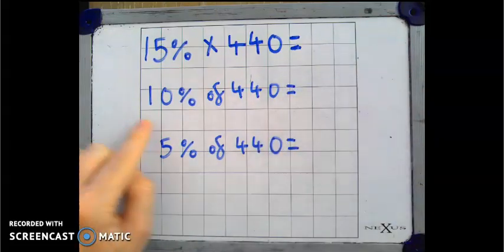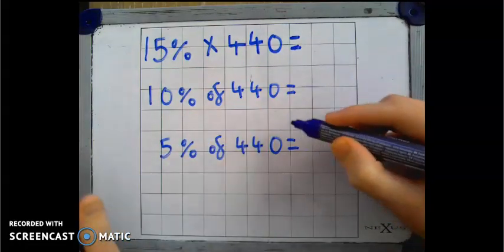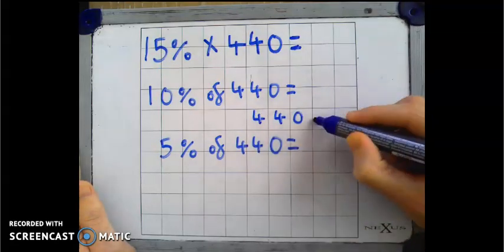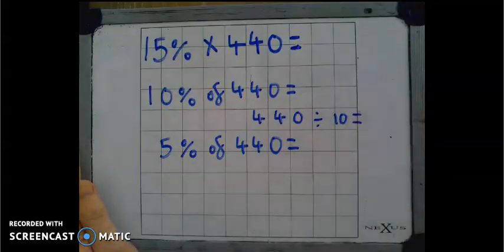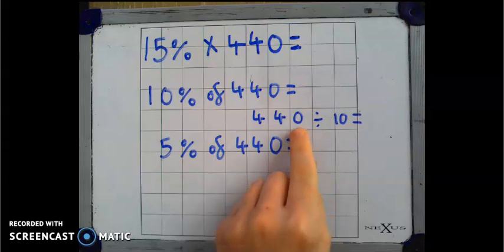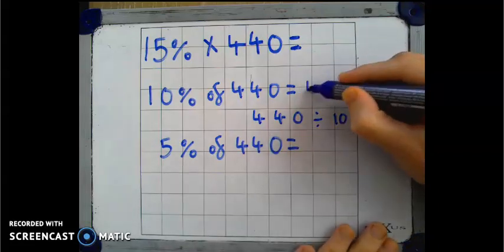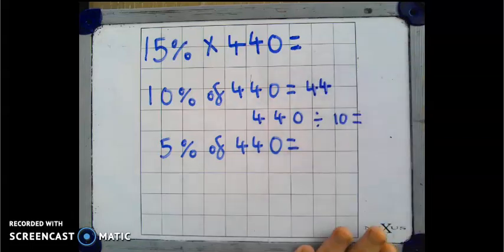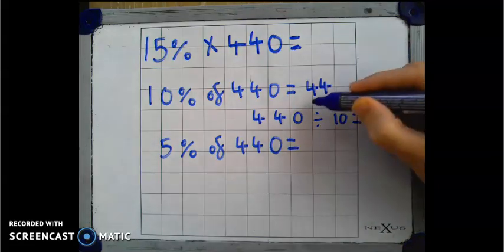Can you remember how to find 10% of a number? That's right, you divide that number by 10. 440 divided by 10. And when we're dividing by 10, the digits move one place to the right, so that 0 is going to go past the decimal point. 4 moves into the 1s, and the other 4 moves into the 10s. So 10% of 440 is 44.